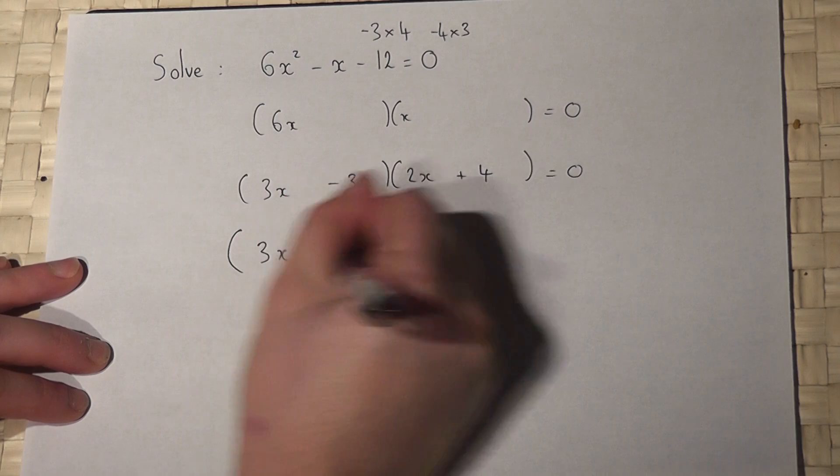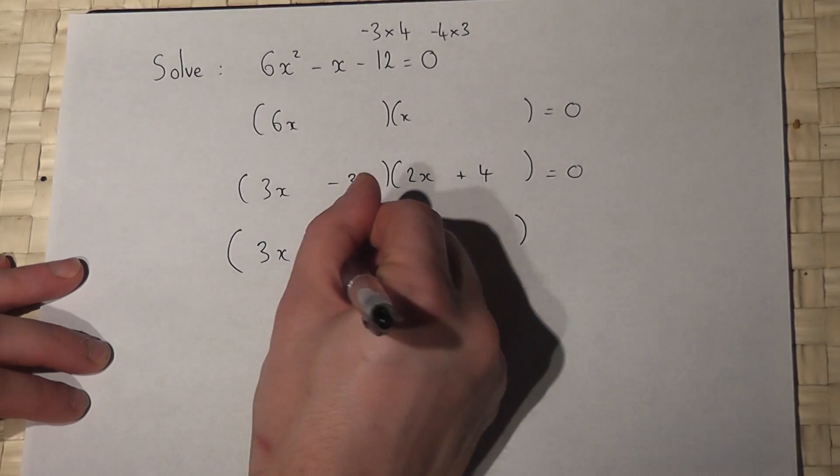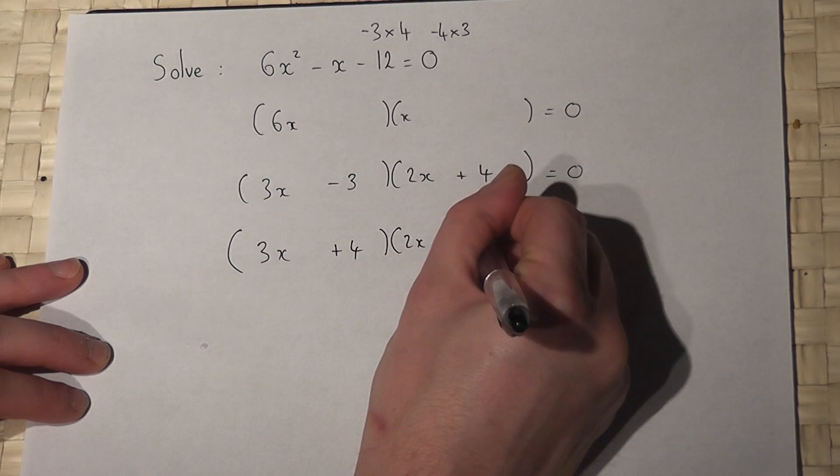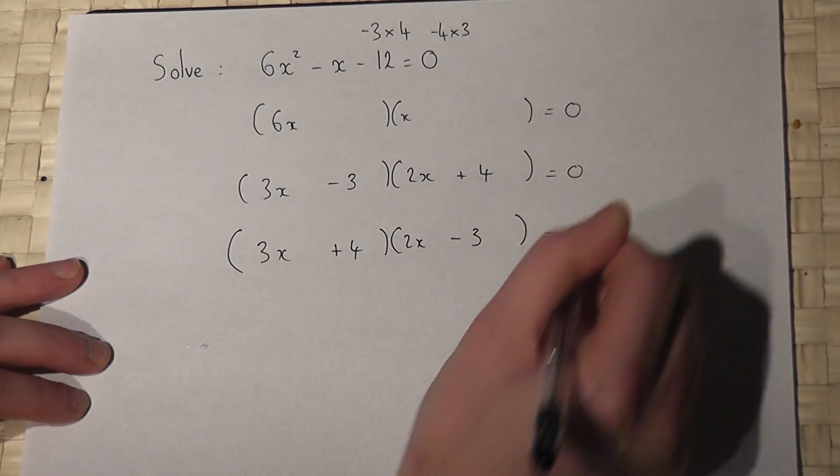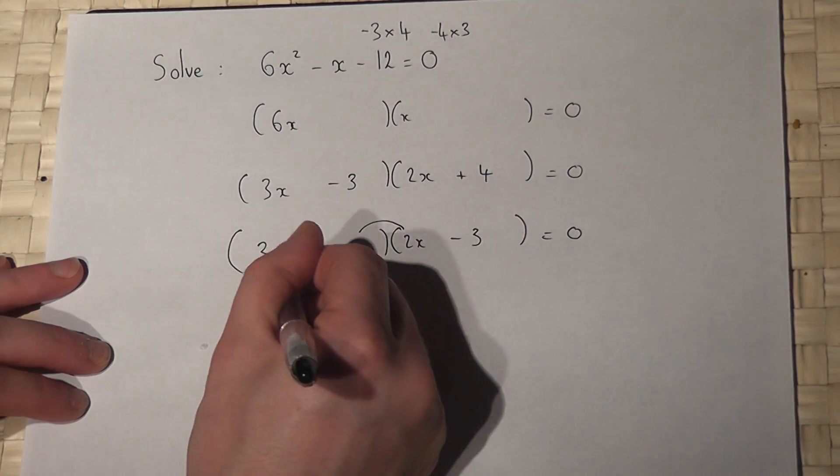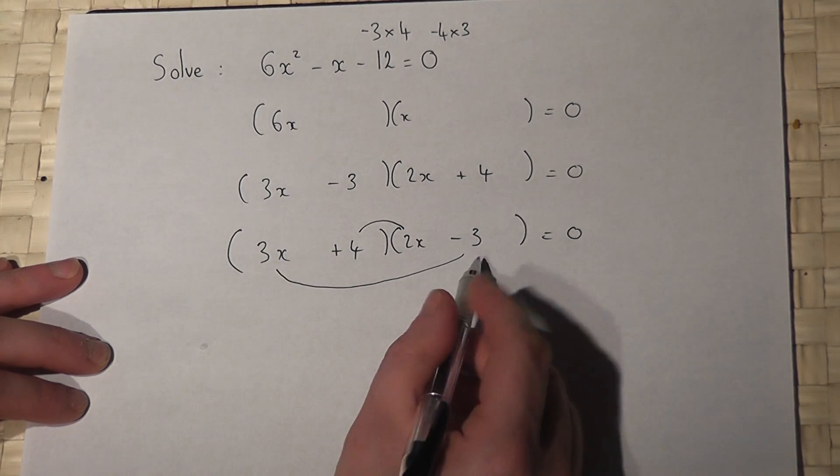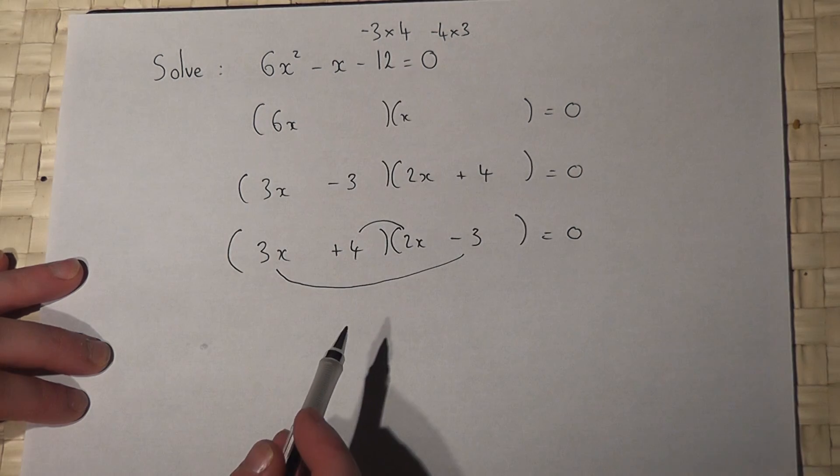However, if I keep going and try the options out, if I put a plus 4 here and a minus 3 here, then I get 8x take away 9x. And 8x take 9x is indeed minus 1x.